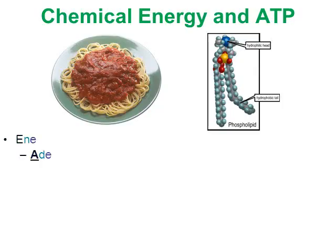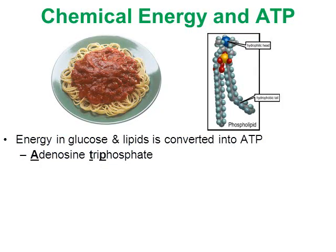As we discuss chemical energy and ATP, the food that we eat will supply the glucose and the lipids required to build ATP molecules. Pasta is high in carbohydrates, and glucose is a carbohydrate. There are also lipids in the foods we eat. So glucose and lipids from our foods are going to be used to build ATP molecules — adenosine triphosphate.